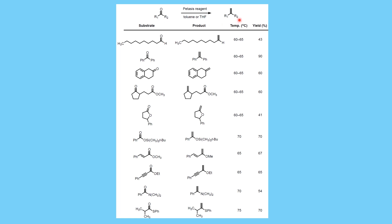Looking at the reactivity pattern with a series of carbonyl compounds, a particularly interesting case involves both ketone and ester moieties. Since ketones are more reactive than esters, using only one to two equivalents results in selective reaction at the ketone position. The Petasis reagent is very selective — even silyl groups are tolerated, and it works on alpha-beta unsaturated ketones and alpha-beta unsaturated esters, which are highly reactive.